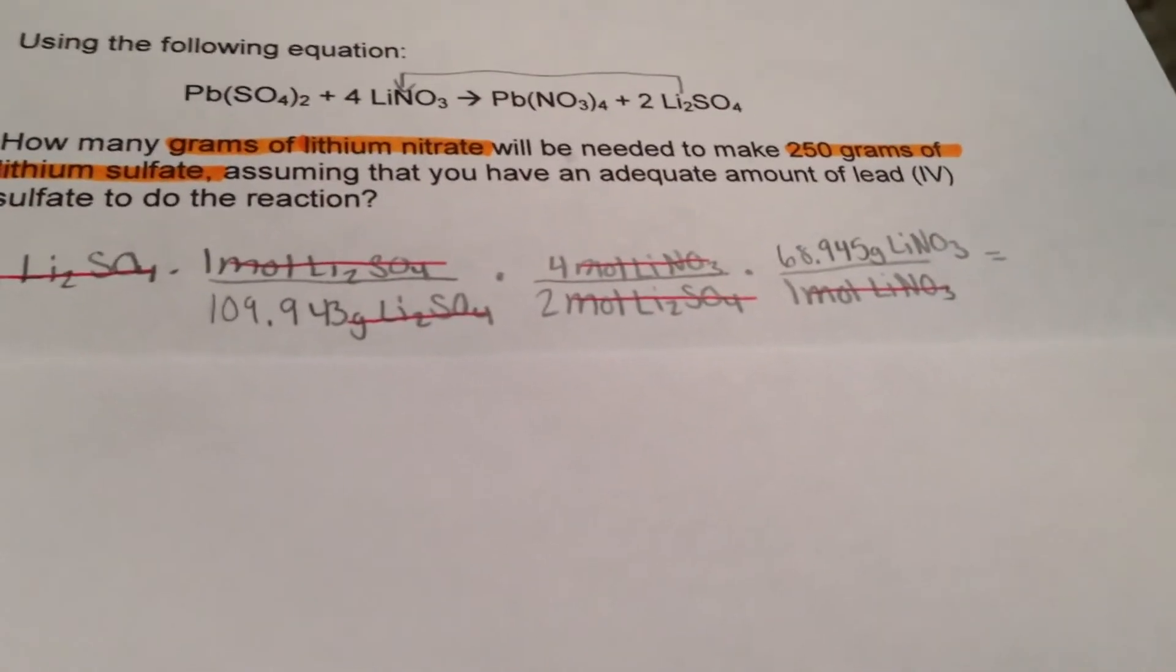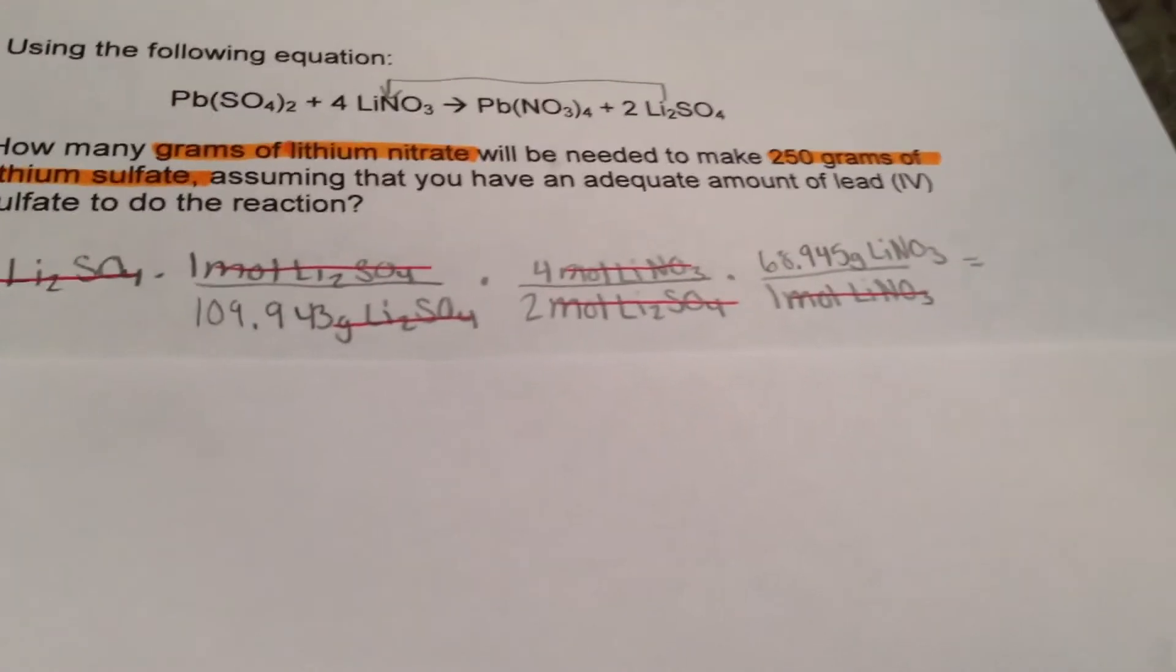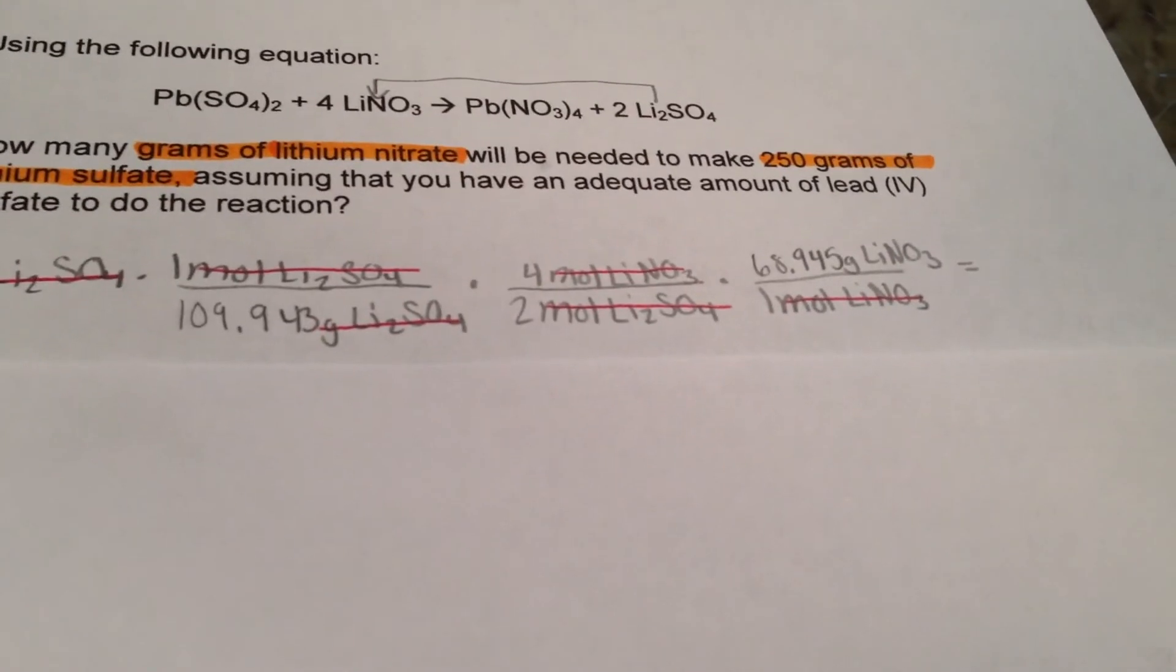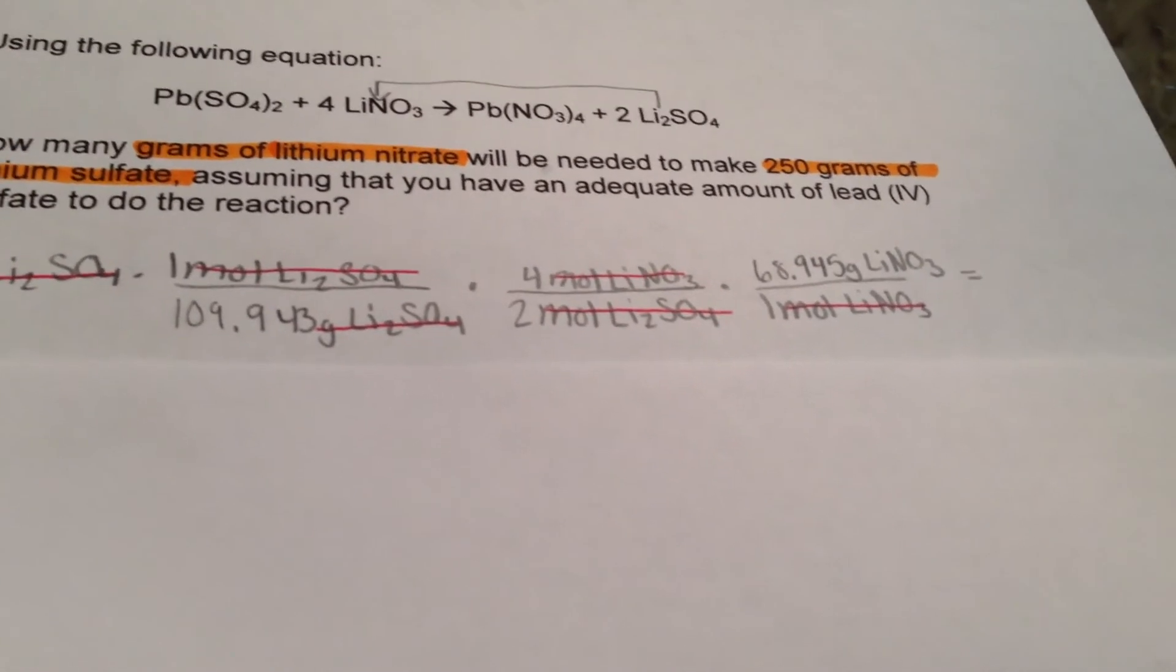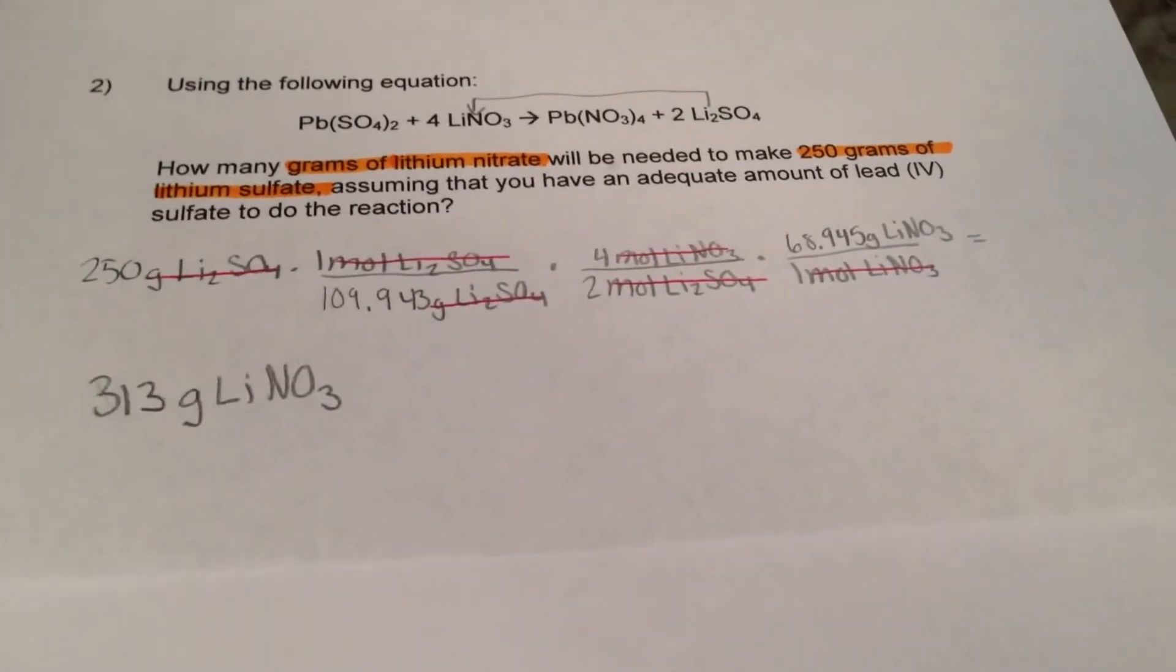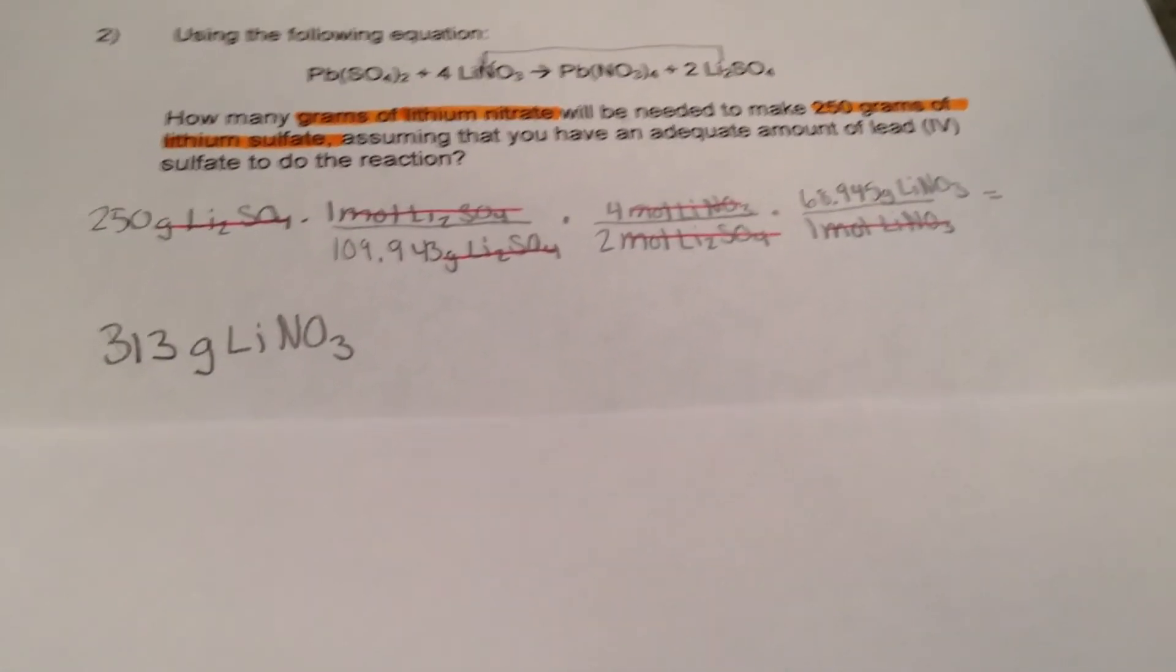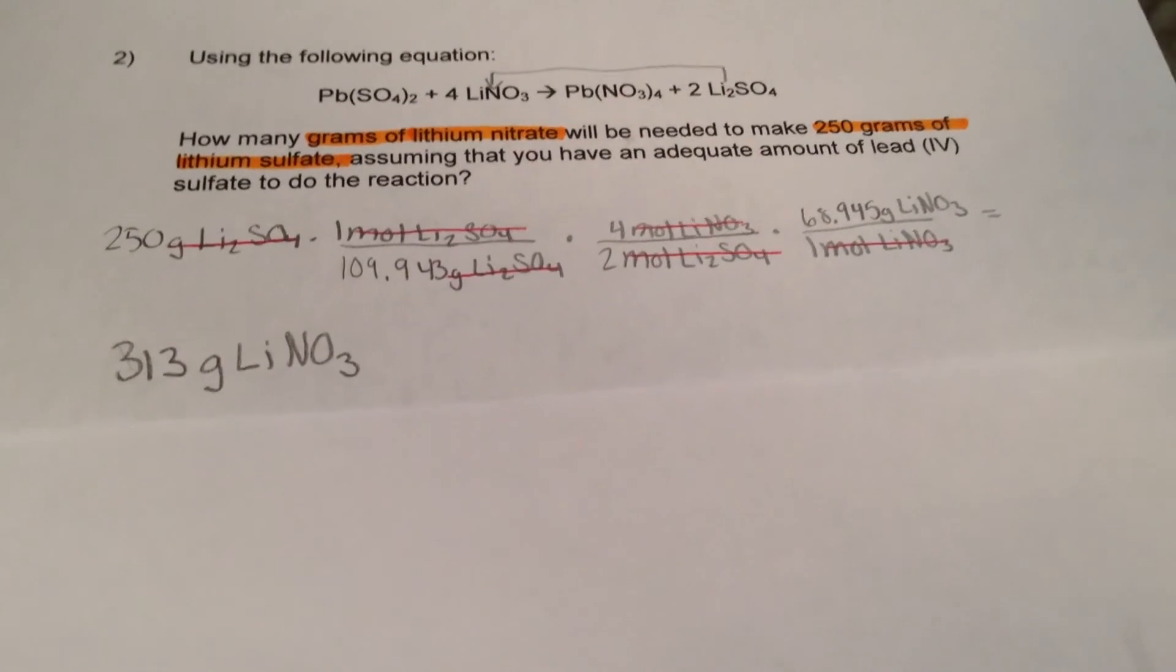Then we do the molar ratio so we have the correct compound that we need. Next, we have to get the compound into grams, so we do the molar mass again. When you put this into your calculator, you should get 313 grams of lithium nitrate because we only have three significant figures.